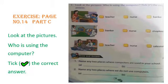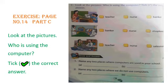Now please come to page number 14, exercise Part C. In this exercise, we have to look at the pictures and identify who is using the computer, then tick the correct answer. Let's look at the first picture carefully. Who is using a computer — a teacher, a nurse, or a banker? Yes, a teacher is using a computer. Please put a tick on teacher.